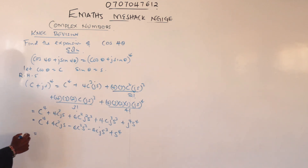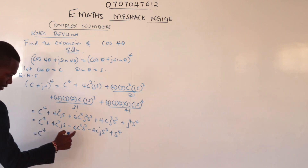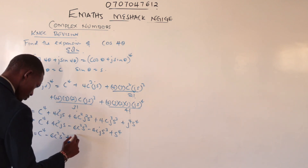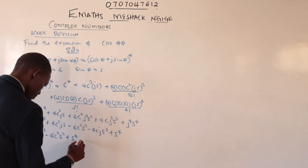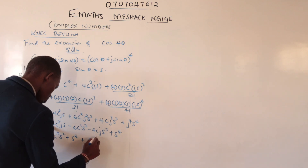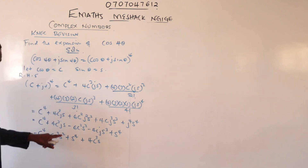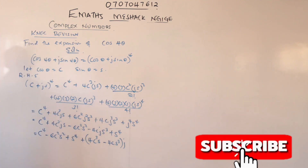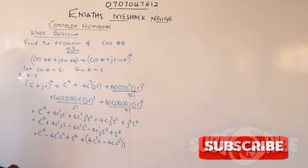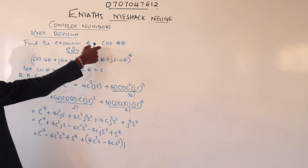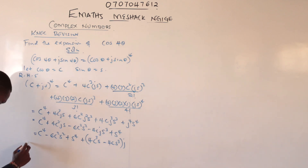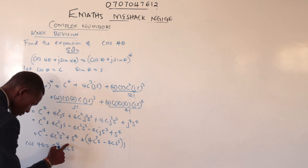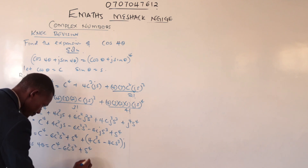Taking real and imaginary parts together: the real parts are c⁴, −6c²s², and +s⁴. The imaginary parts are 4c³s − 4cs³, multiplied by j. Our interest here is only the real part, so cos(4θ) = c⁴ − 6c²s² + s⁴.